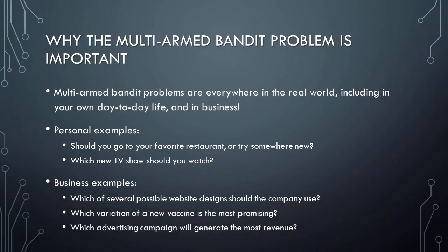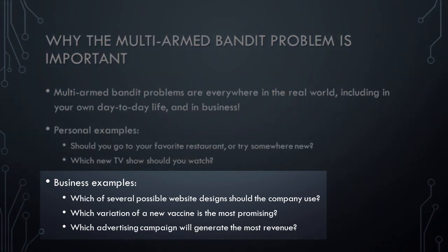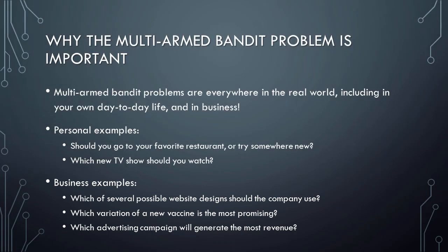In business, there are also countless challenging decisions that are actually multi-armed bandit problems. For example, imagine that a company wants to update the look and feel of its website, and it has several possible designs from which to select — how can the company identify the best design as quickly as possible? Or imagine that a highly contagious virus has emerged, and a pharmaceutical company has developed several variations of a vaccine — how can the company quickly determine which variation is the most promising? Or imagine that a company has several competing strategies for advertising its latest product — how can the company quickly learn which advertising campaign will generate the most revenue? The good news is that it's possible to solve almost any multi-armed bandit problem by building a reinforcement learning-based AI system that uses what is known as Thompson Sampling.